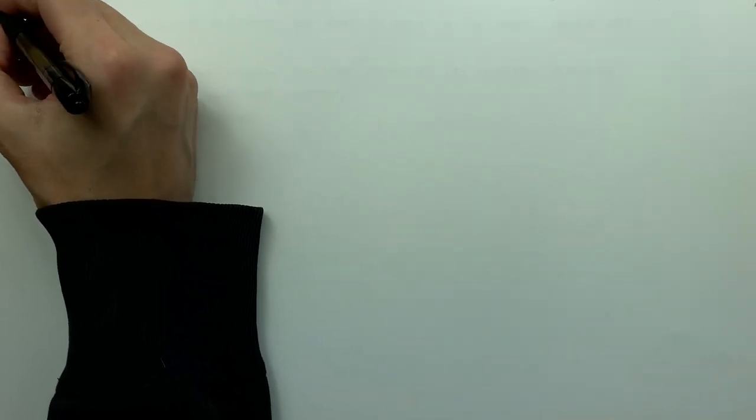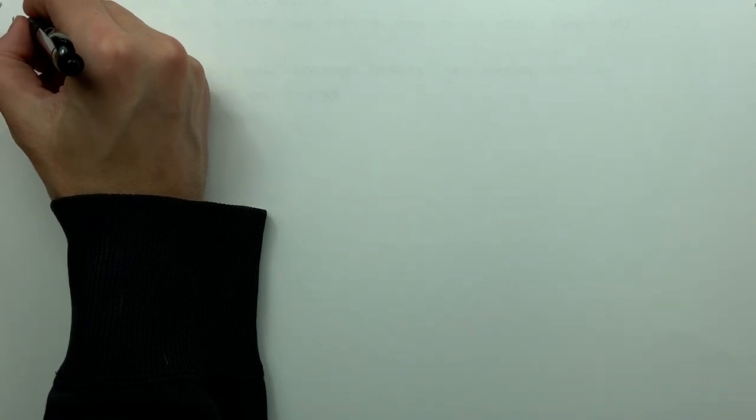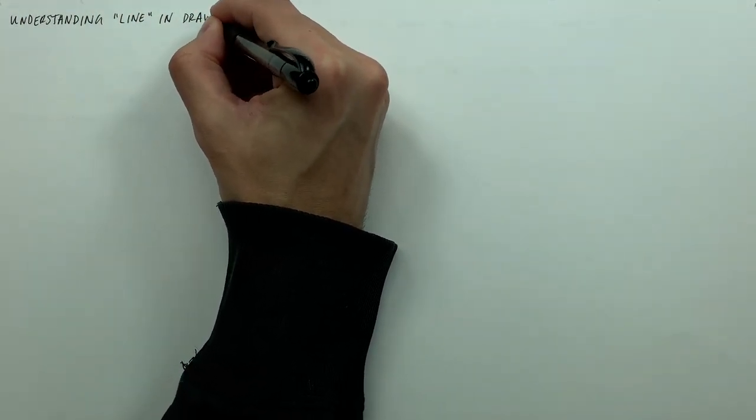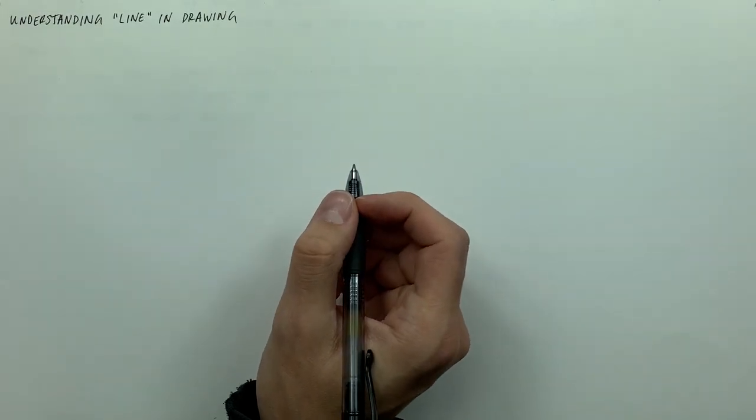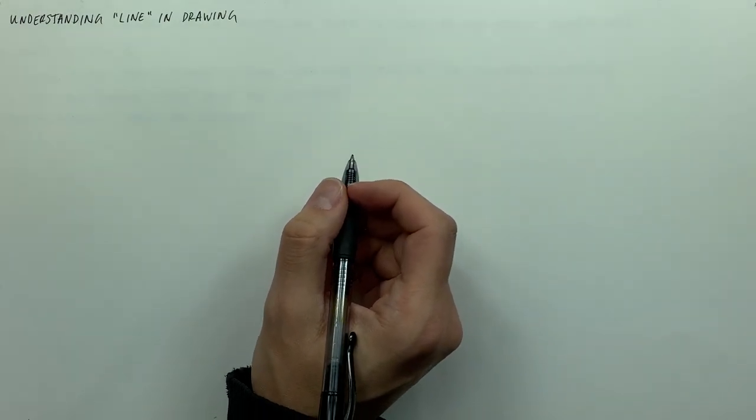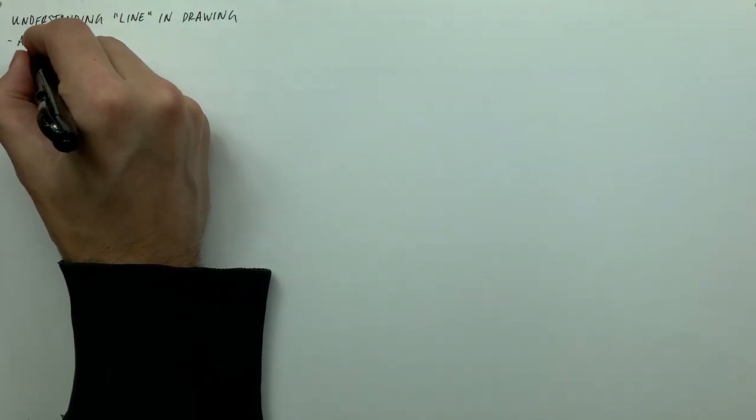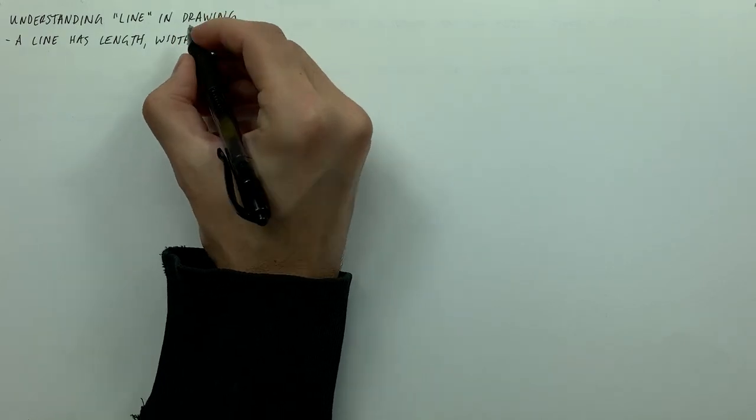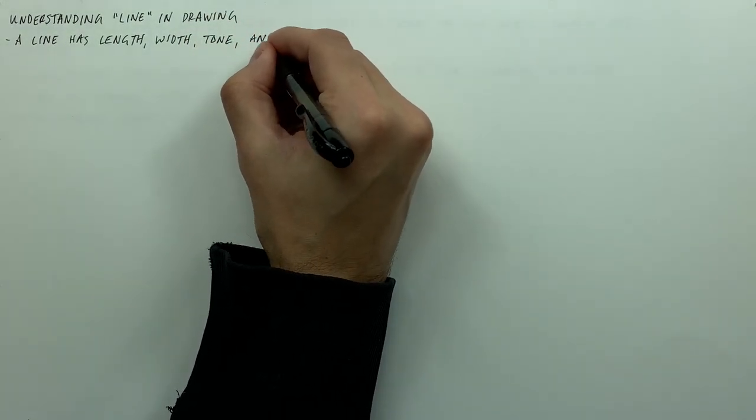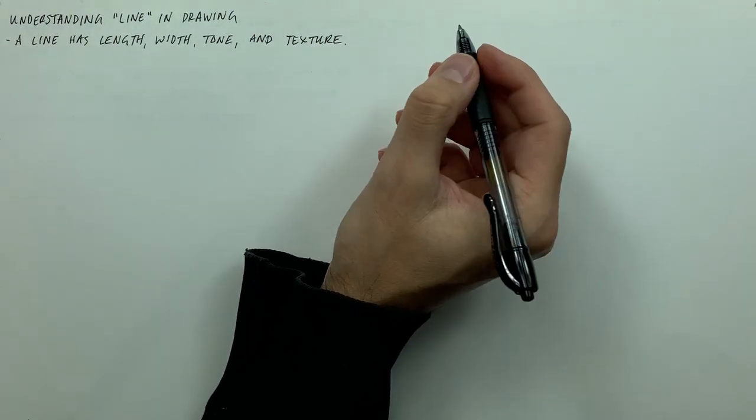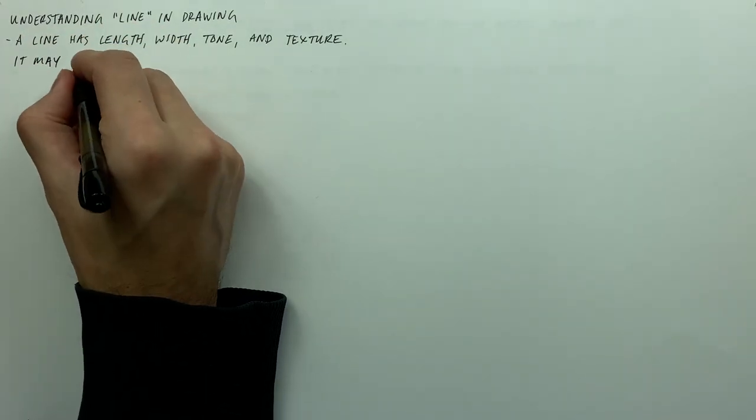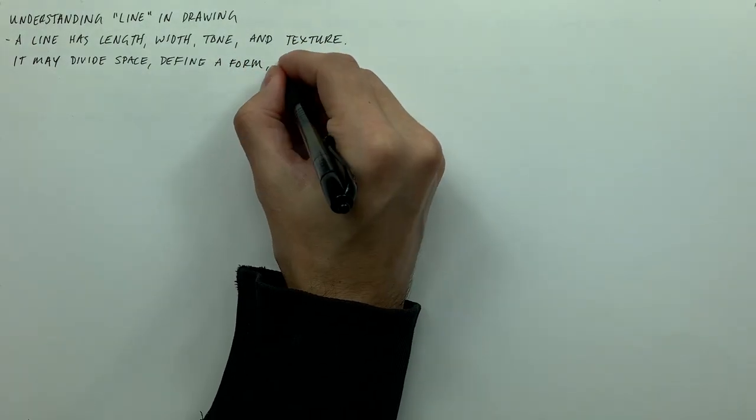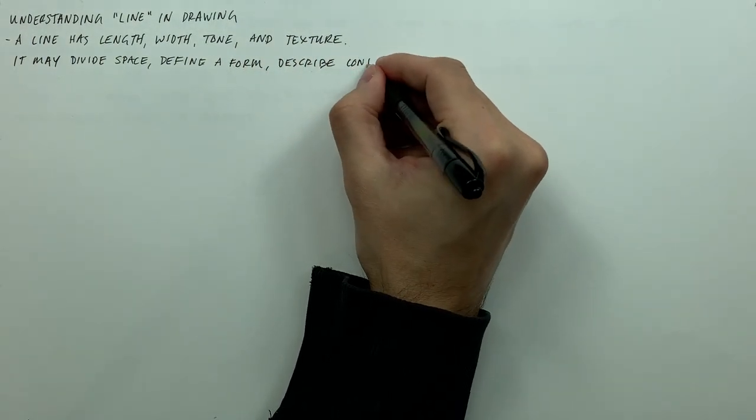Okay, so to start we need to ask ourselves what does line actually mean in drawing. Understanding line in drawing, it's important to note here first and foremost that line has a length, width, tone, and texture. It may divide space, define a form, describe a contour, or simply suggest direction.